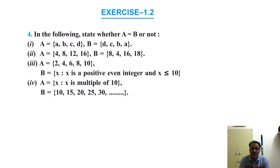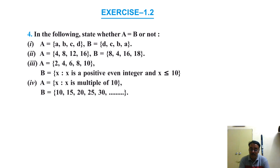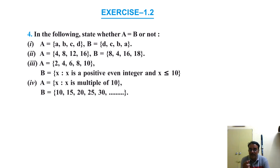Third: A = {2, 4, 6, 8, 10} and B = {x such that x is a positive even integer and x ≤ 10}. Writing out B gives {2, 4, 6, 8, 10} — the same numbers — so both are equal. Fourth: A = {x such that x is a multiple of 10} and B = {10, 15, 20, 25, 30, ...}. Here 15 and 25 are not multiples of 10, so they would not appear in A. Therefore A ≠ B.